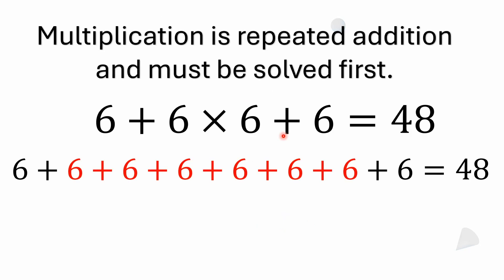Again, multiplication is nothing more than repeated addition and it needs to be solved first. You can take six times six and replace it with equivalent addition — six times six is the same thing as adding six six times. When you add all those sixes up, you get 48.